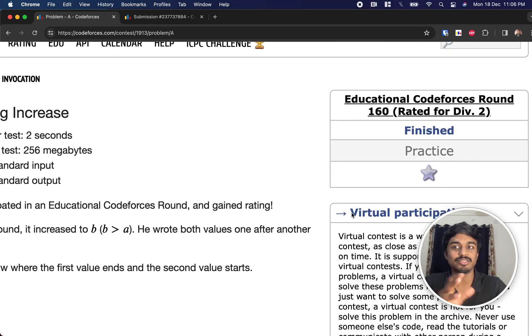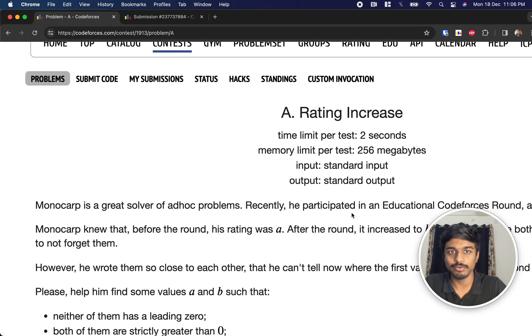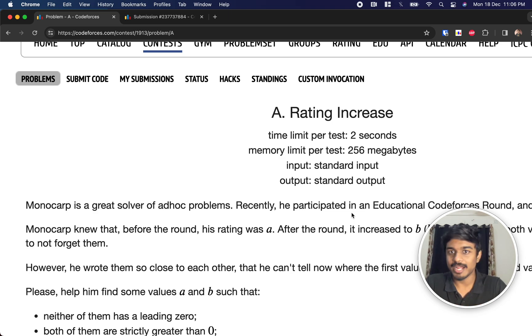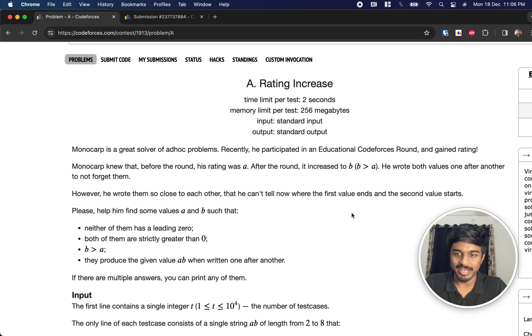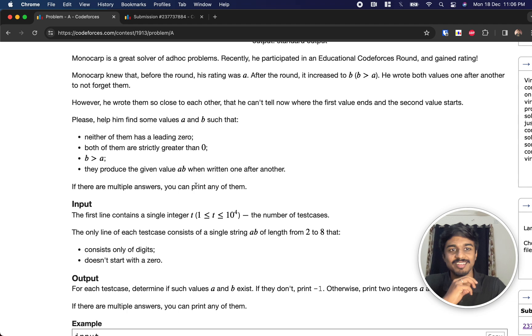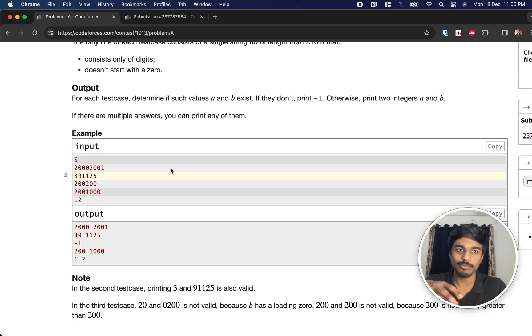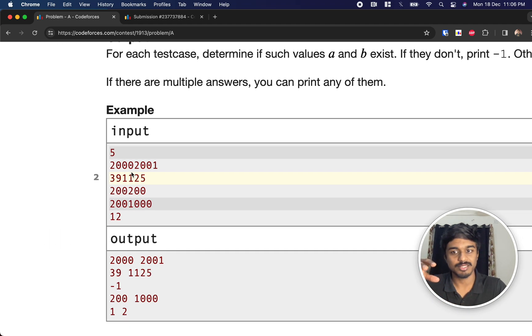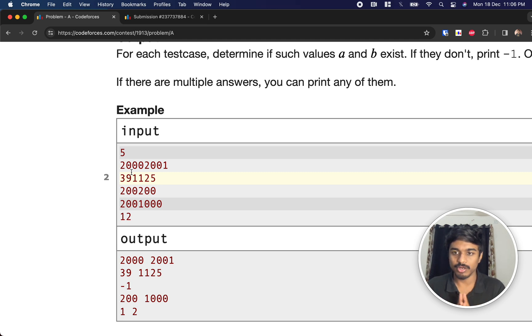Welcome back to another video. This is Educational Codeforces Round 160. We're going to solve the first problem, that is Rating Increase. We have our friend Monocarp here. The thing is, Monocarp wrote a string score and he wants to know how to split this score such that b is greater than a.